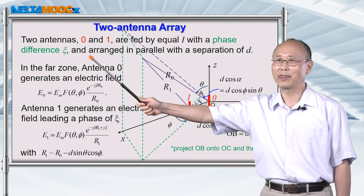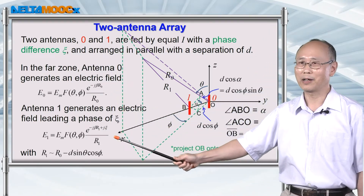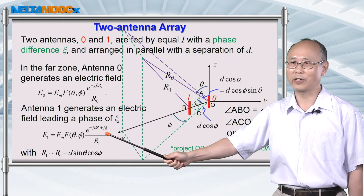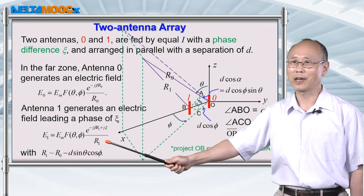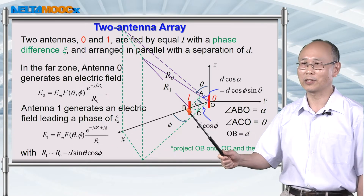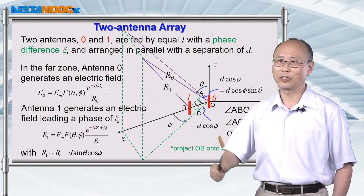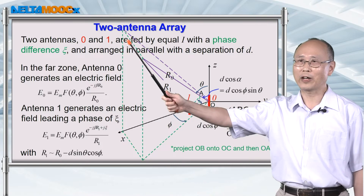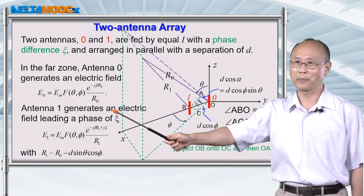You need to add this additional phase into the expression for antenna 1 — so you have plus j in this expression, divided by r1, where r1 is the distance between this antenna and the point of interest. The total field in the far zone is going to be a summation of these two formulas.